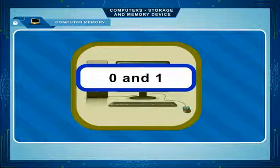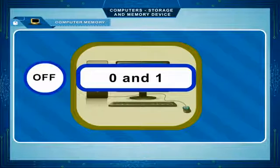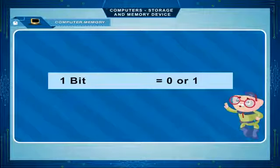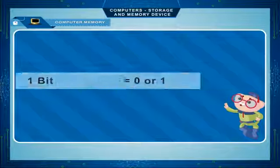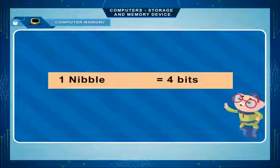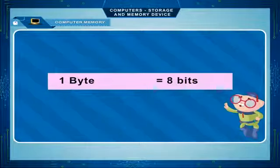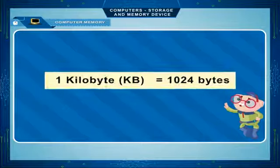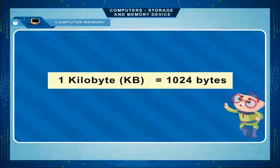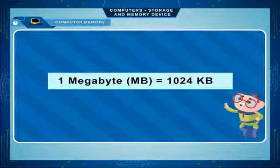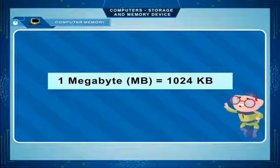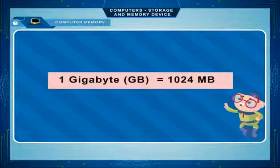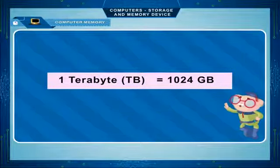One kilobyte (KB) is equal to 1024 bytes. One megabyte (MB) is equal to 1024 KB. One terabyte (TB) is equal to 1024 GB.